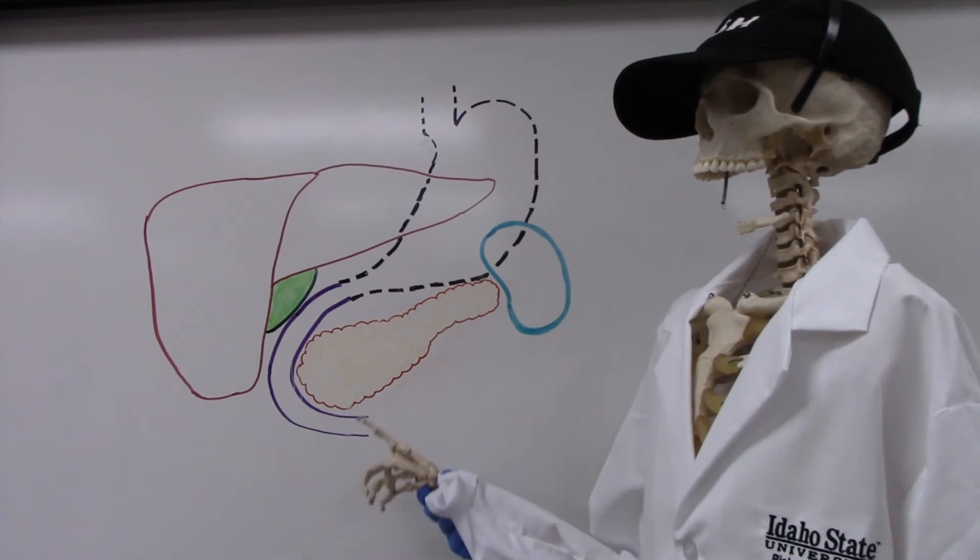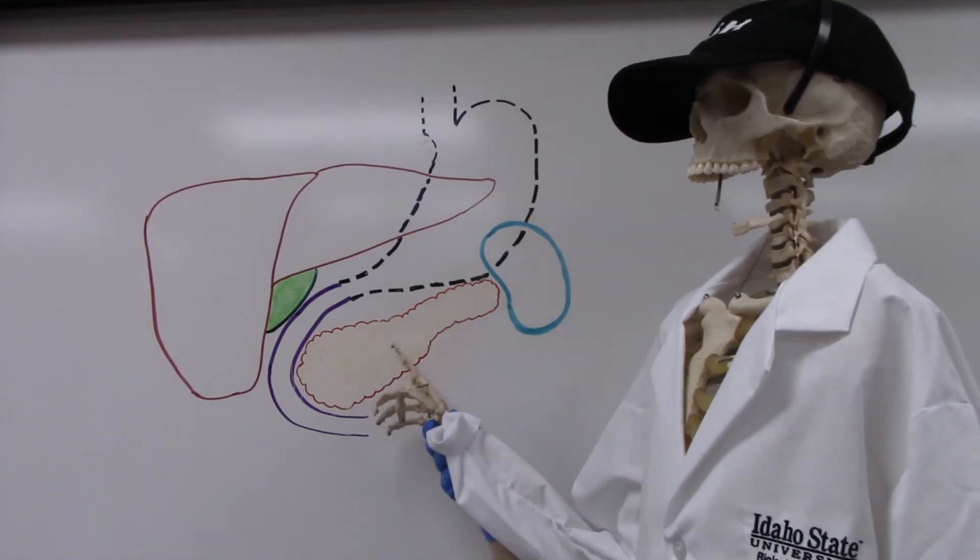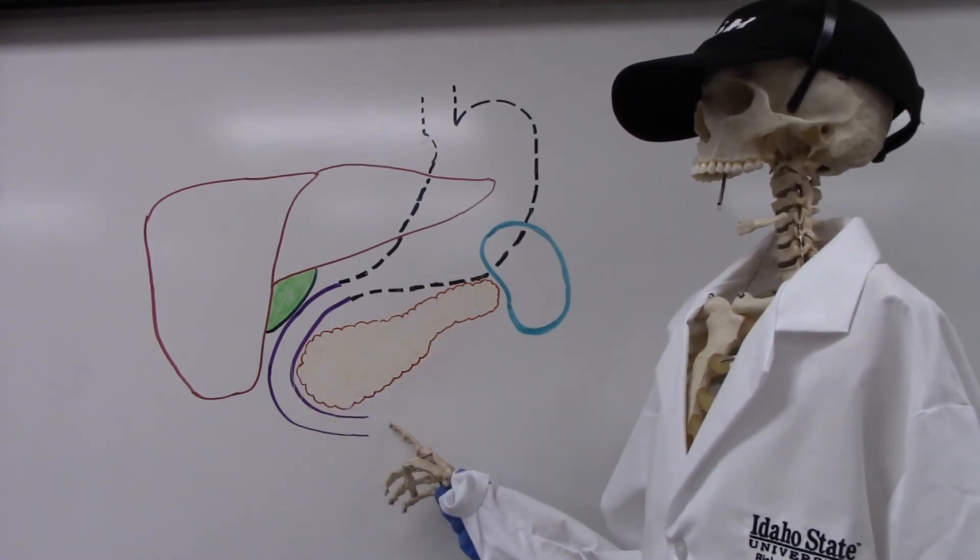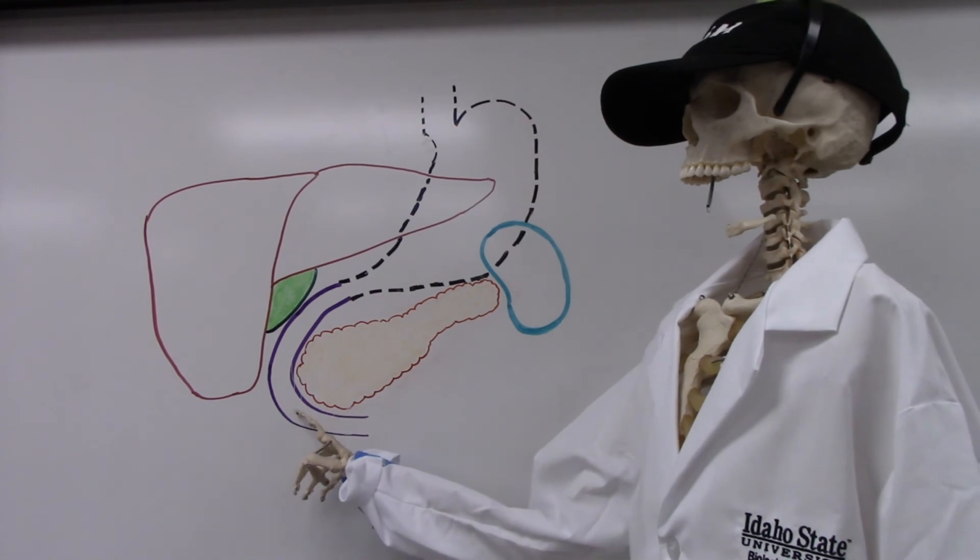This next organ is the pancreas. The pancreas sits deep to the stomach and is nestled up against the duodenum. It is responsible for secreting digestive enzymes into the duodenum.